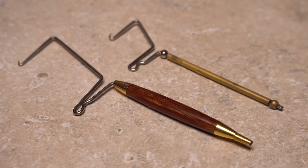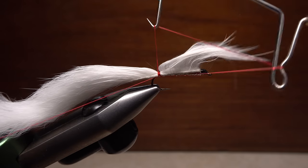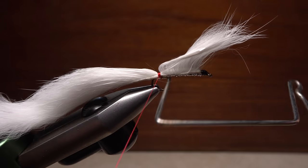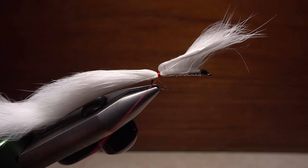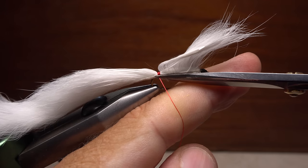Here's where a larger whip finisher with a big gap really comes in handy. It allows you to whip finish at this location without getting tangled up in the front of the hook or in the long rabbit fur. After a five or six turn whip finish, seat the knot well, then snip or cut your tying thread free.